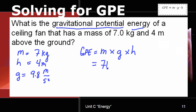For mass, it's 7 kilograms. The rate of gravity is 9.8 meters over second squared. And the height is 4 meters above the ground.